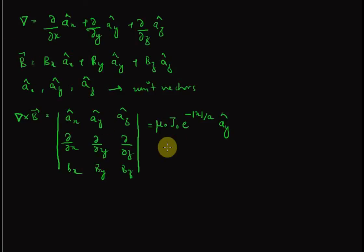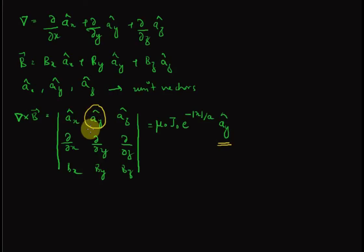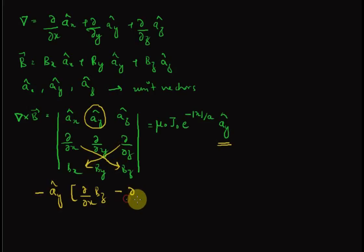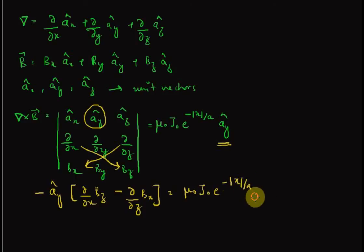We can make simplifications because the current density is only along the y direction, so the remaining components vanish. We only need the y-direction component from the cross product. From the determinant expansion, the y component gives: (∂B_z/∂x) minus (∂B_x/∂z) equals mu_0 J_0 e^(|x|/a) in the y direction.